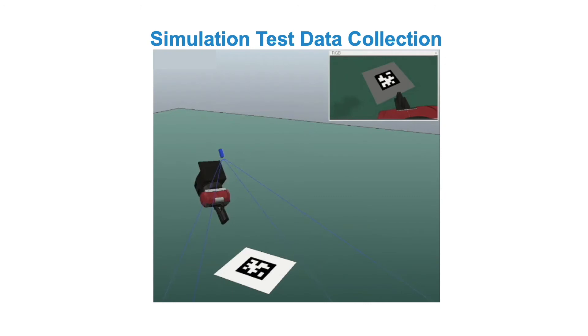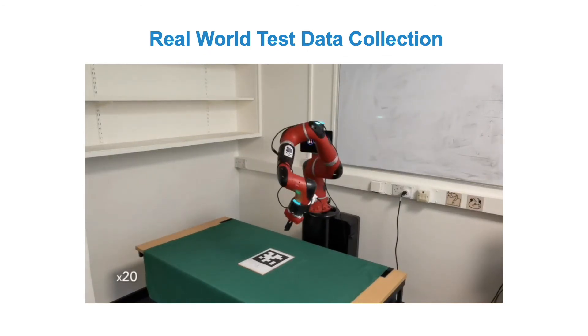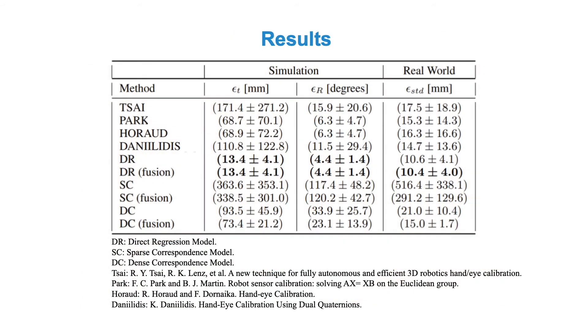We benchmark all our methods against each other as well as against well-established off-the-shelf classical methods. We use simulation testing to evaluate the methods against ground truth labels. We also evaluate all methods with real-world experiments where we compare the standard deviation in the estimate of an AprilTag pose in the base frame of the robot. Surprisingly, we find that the simplest direct regression method outperforms both our other deep learning methods and the classical methods tested.